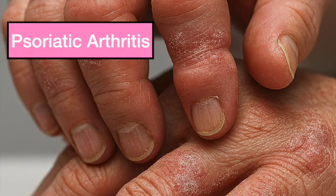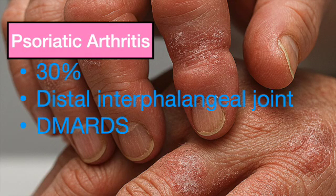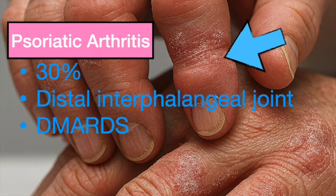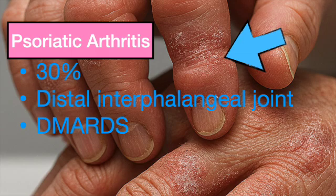Psoriatic arthritis occurs in approximately 30% of patients and often involves the distal interphalangeal joints, spine, or knees. It may precede or follow the onset of cutaneous psoriasis. Early recognition and treatment are essential to prevent joint damage. DMARDs or biologics are the mainstay of treatment in these patients.